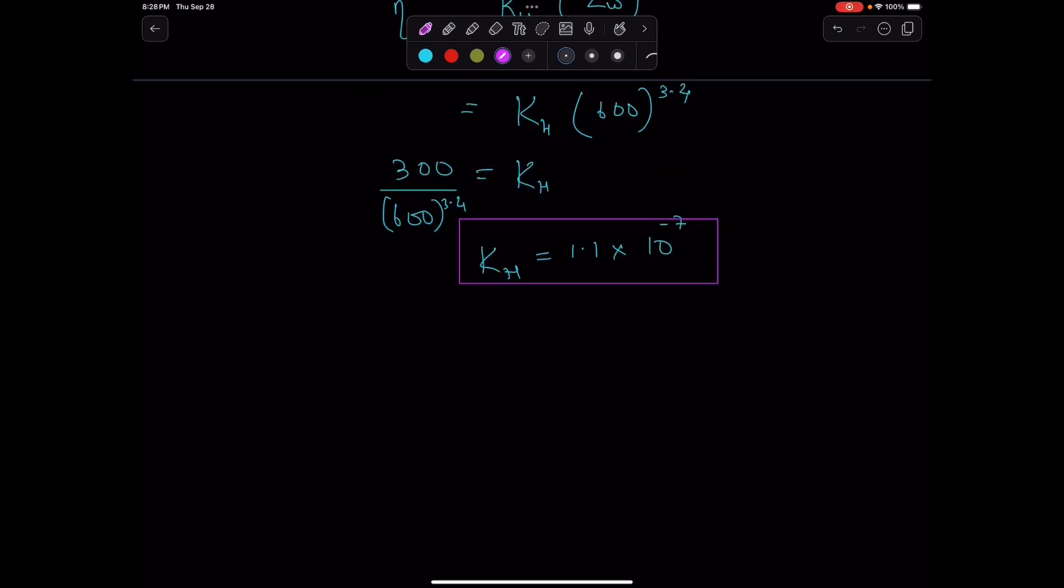Now, knowing KH, we can find the value of viscosity for ZW values greater than 600. So eta at ZW equals 800 is going to be 1.1 times 10 to the negative 7 times 800 to the power 3.4, which equals 816.4 pascal seconds. This is the value of viscosity when ZW is 800.